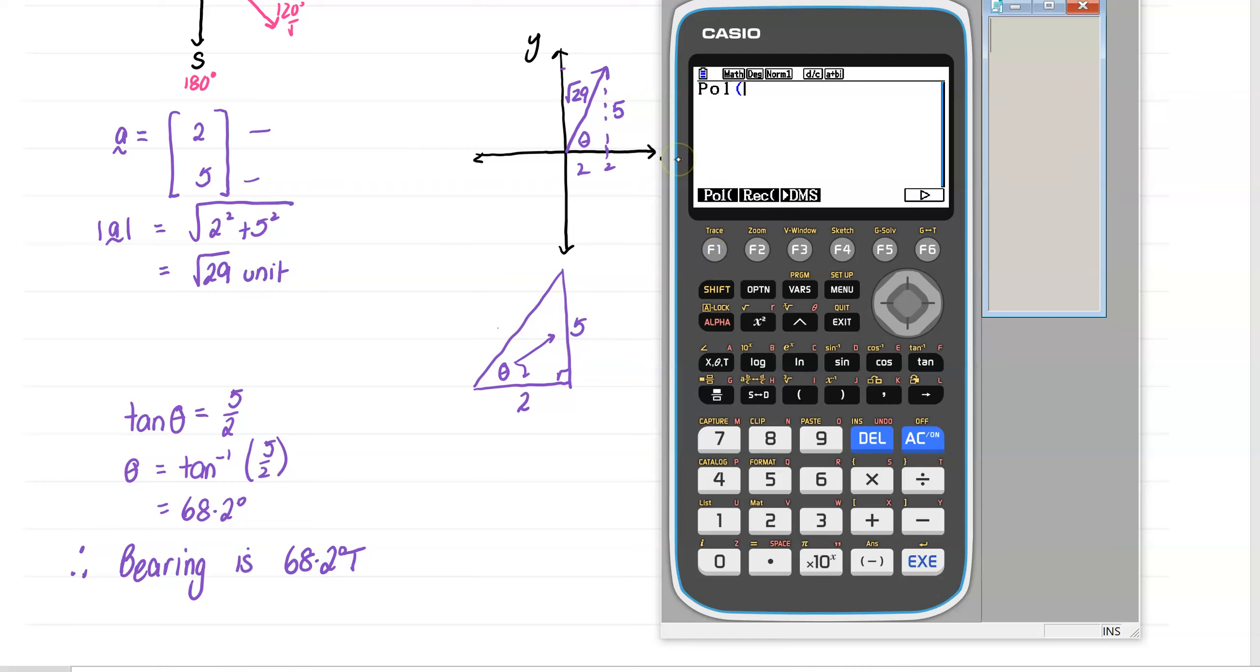And we're going to use this thing called polar form. For now, we're looking at polar form and we can put in the 2, 5, close your brackets and watch the magic. We've got root 29, which was our length over here. And look here, 68.19, which is 68.2, that's our degrees. Fantastic. So instead of doing all of this, we could have just gone straight to our calculator and got our magnitude and direction there.